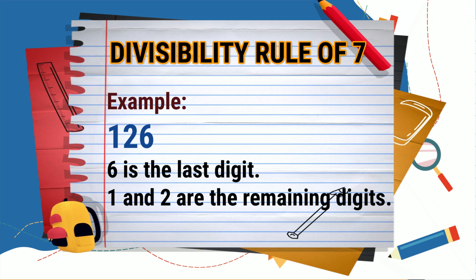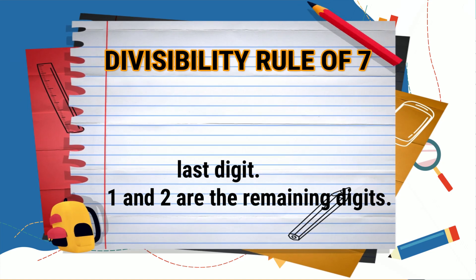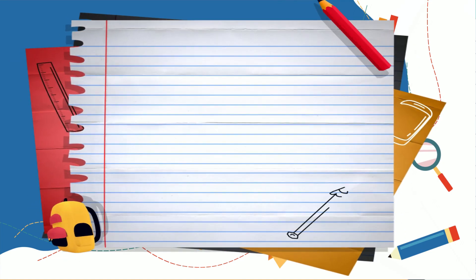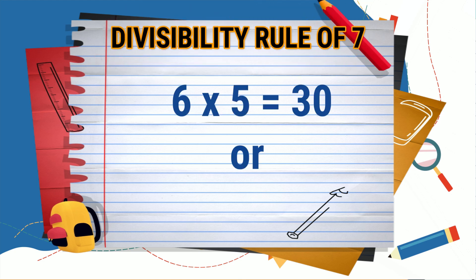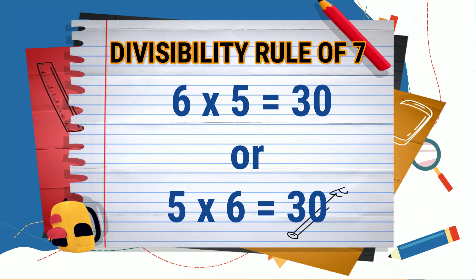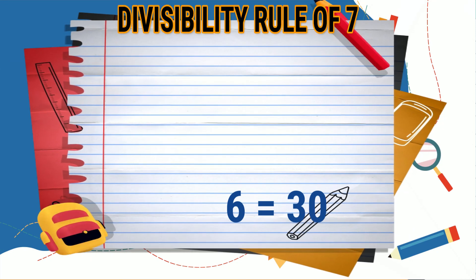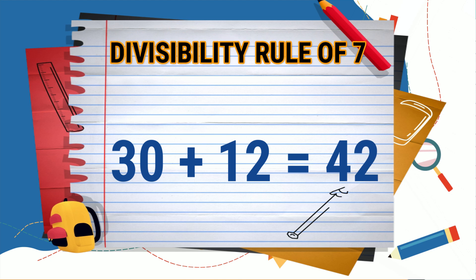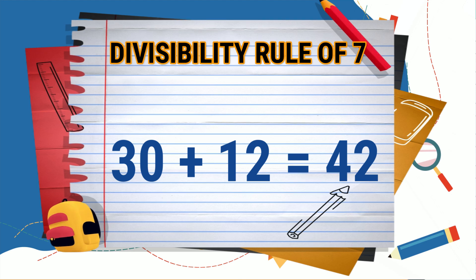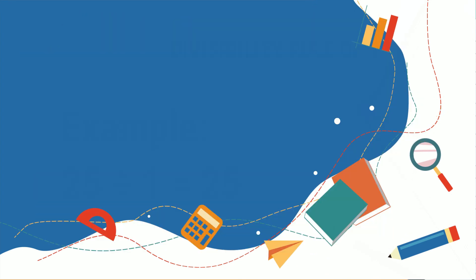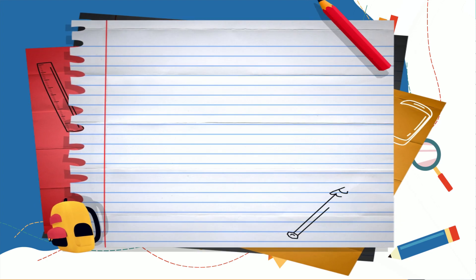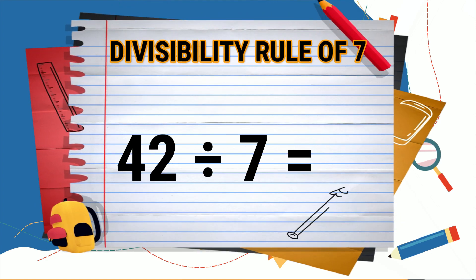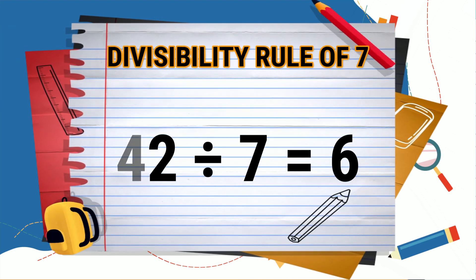Six is the last digit; one and two are the remaining digits. Based on the rule, we need to multiply the last digit by five — so six times five is equal to 30. Then add 30 and the remaining digits, which are one and two, so 30 plus 12 is equal to 42.